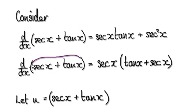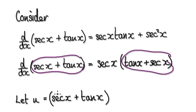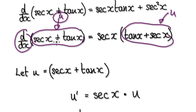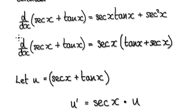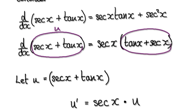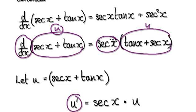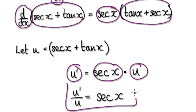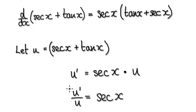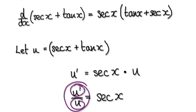So we are trying to integrate secant of x. If you let u equal secant of x plus tan of x, then that same expression also appears in the factorized derivative, making it also equal to u. Differentiating u gives u prime equal to secant of x times u. Dividing both sides by u gives u prime over u equals secant of x. When integrating, always keep an eye out for something being the exact derivative of another thing.